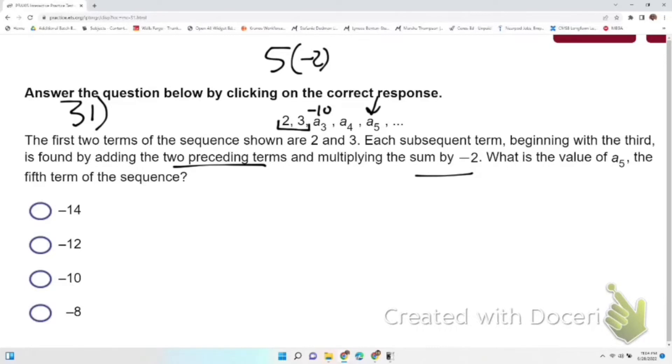Now we're going to do the same thing to get a₄. We'll add our two subsequent preceding terms together, so we get negative 7 times negative 2, which gives us positive 14.